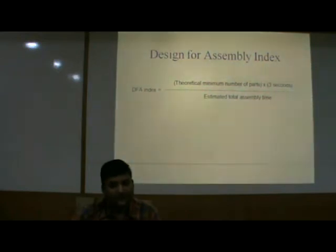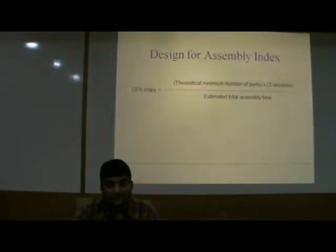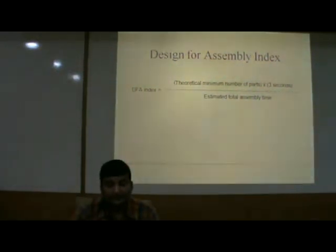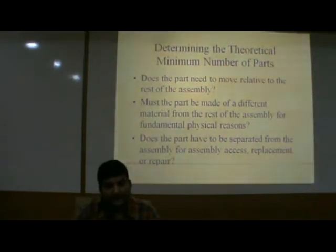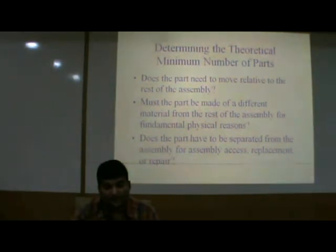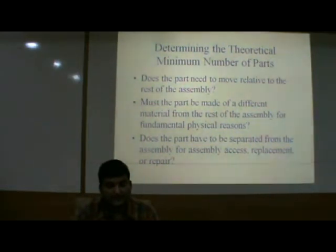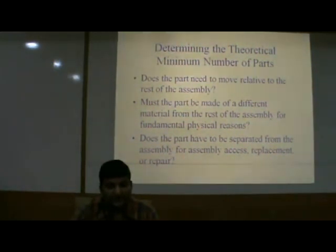The DFA index formula is: DFA index equals the theoretical minimum number of parts multiplied by 3 seconds, divided by estimated total assembly time. The total assembly time is what is consumed for assembling the product. Determining the critical minimum number of parts involves asking: does the part need to move relative to the rest of the assembly? Must it be made of a different material for fundamental physical reasons? Does the part need to be separated from the assembly for access, replacement or repair?